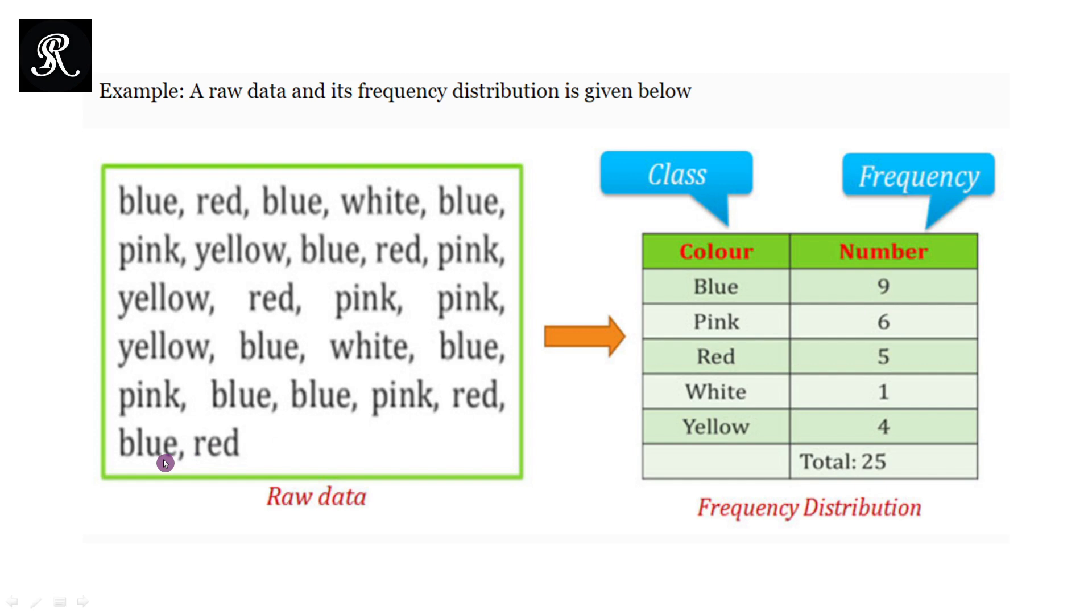So this means the frequency for the blue color is nine. Hence we can say that observations in these classes can appear twice or more than twice. Now the pink color appears here in the raw data how many times? That is six times. The red color, the frequency is five. So what do you mean by frequency? This category red appears five times in this raw data. And the white color appears here only one time, and the yellow four times.